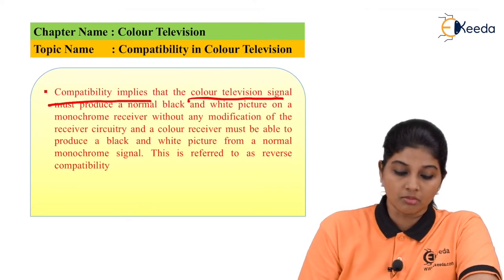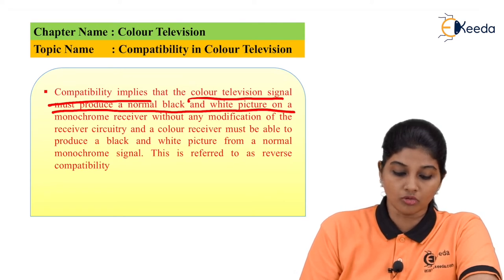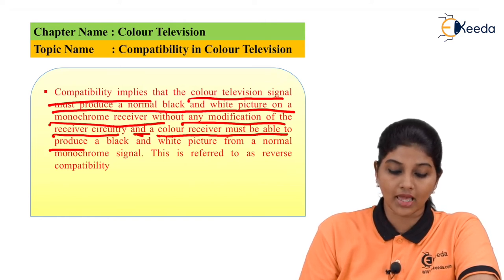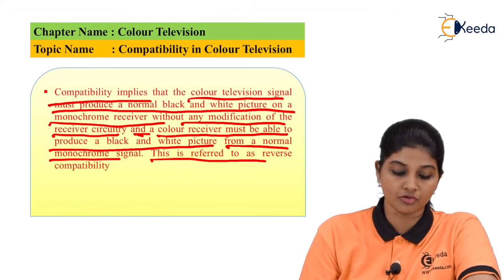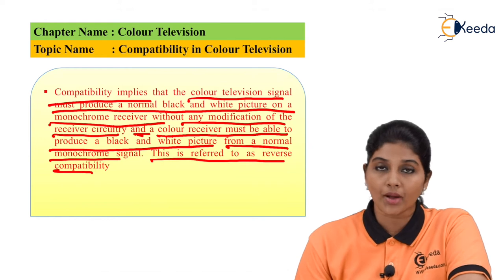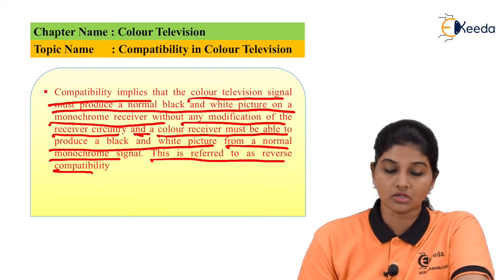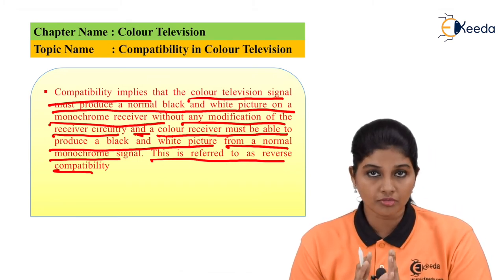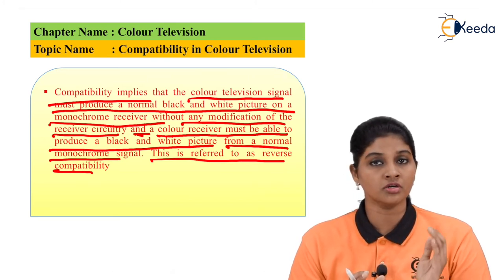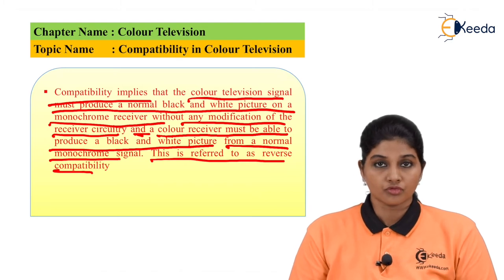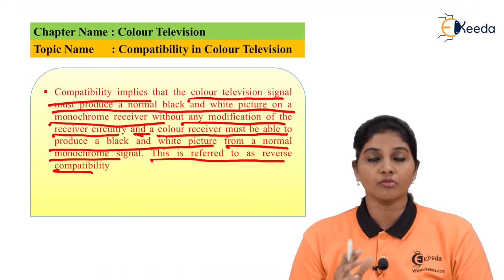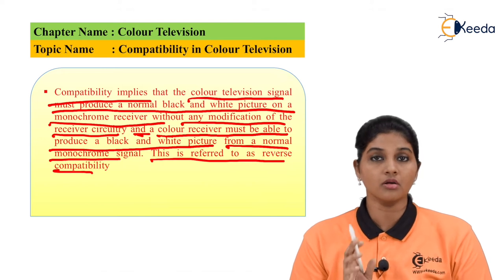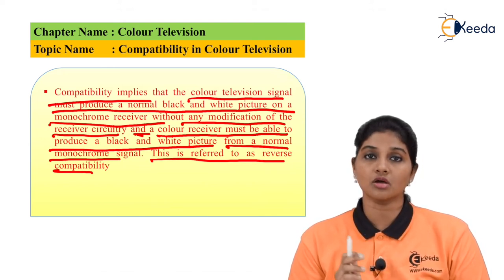The compatibility in case of color television implies that the color television signal must produce a normal black and white picture on the monochrome receiver without any modification of the receiver circuitry. A color receiver must also be able to produce a black and white picture from a normal monochrome signal, and this is referred to as reverse compatibility.